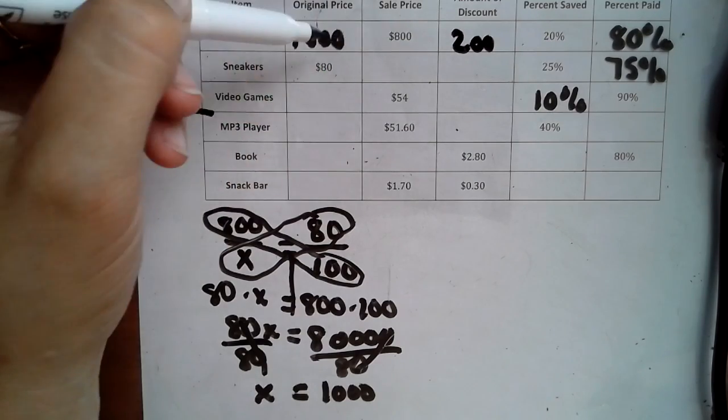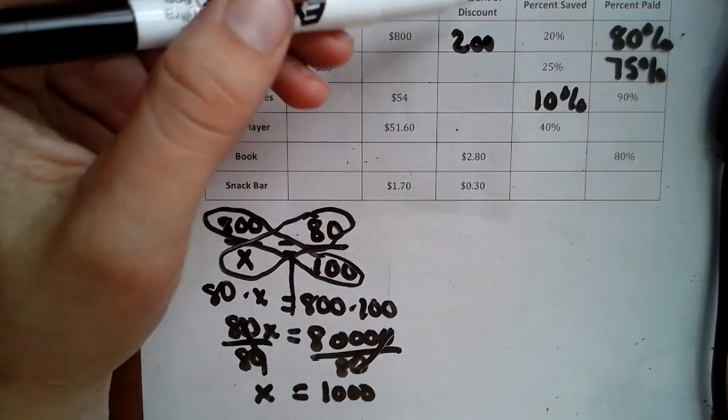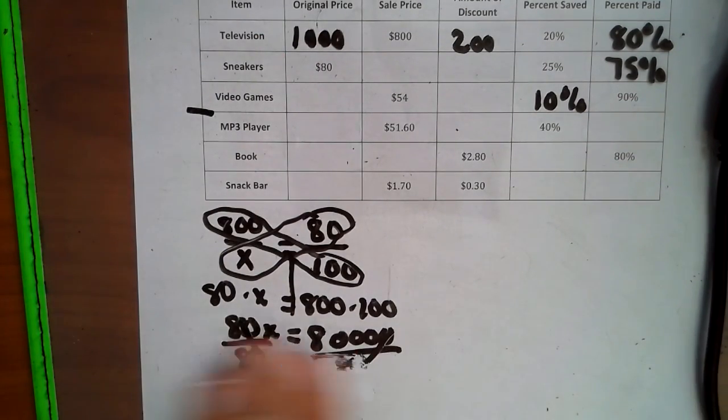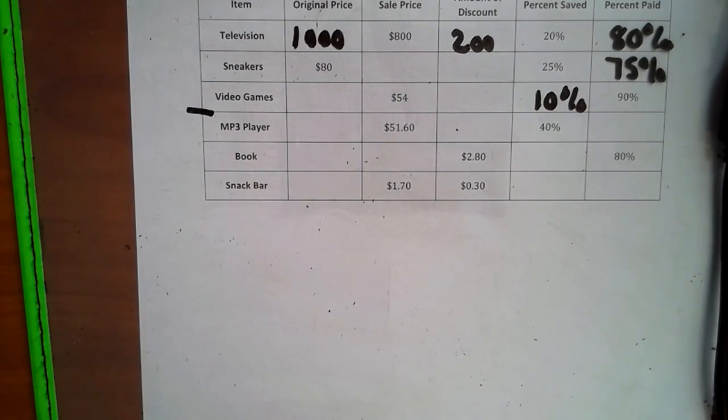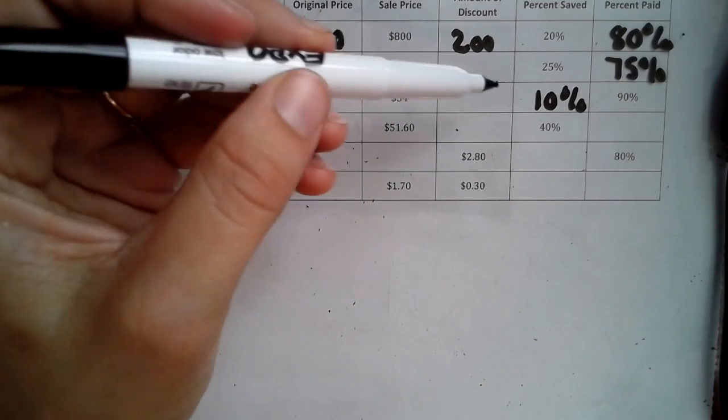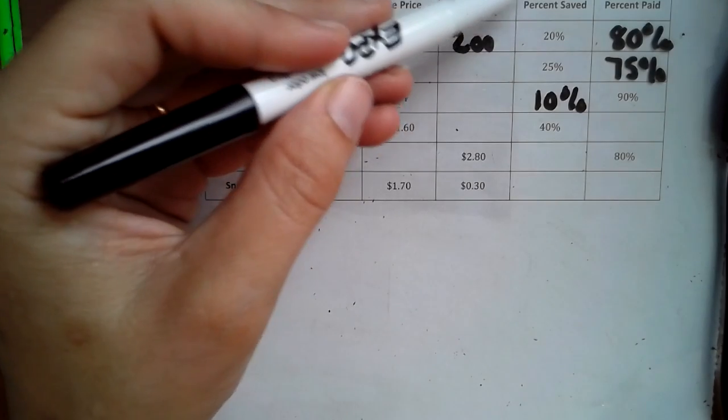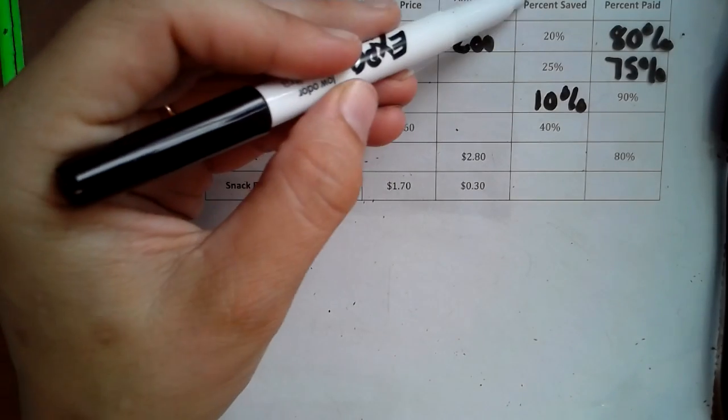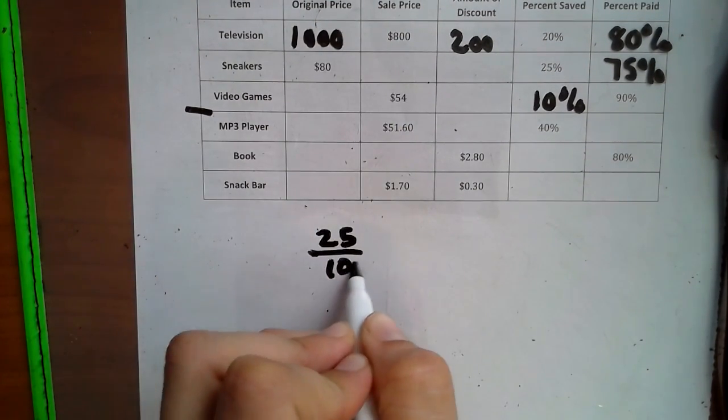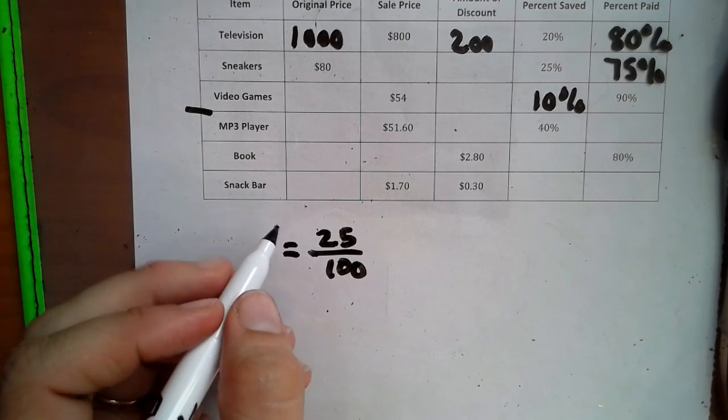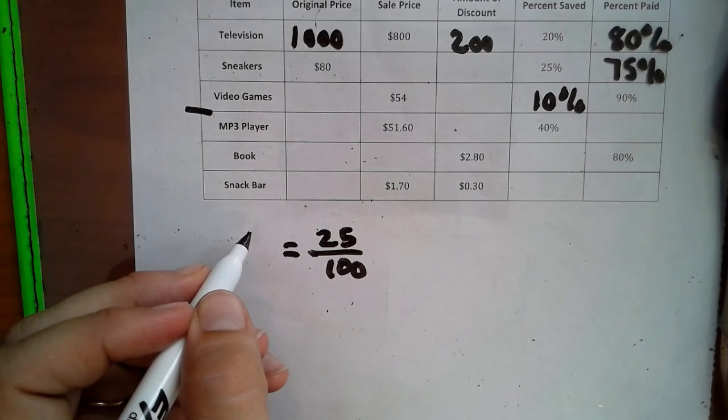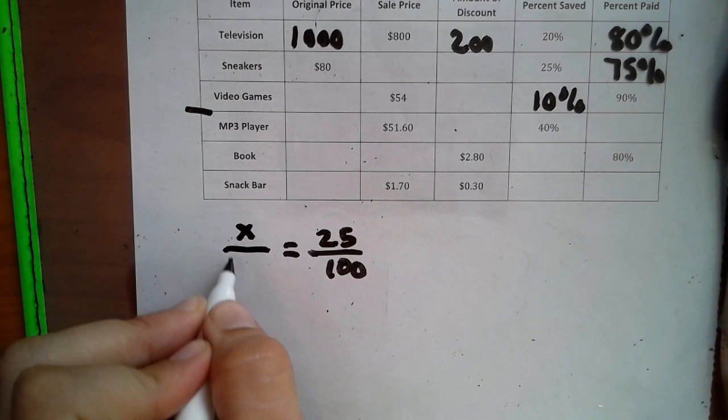We can figure that out just by sale price minus original price, the amount of discount was $200, and that's 20% of the money. So that's one problem. Now going into our next problem for the sneakers. It says our original price was $80. We don't know the sales price. We don't know the discount. But the percentage saved and the discount are the same thing. So these two things will help each other out. So we can do 25% over 100, and then we can figure out the discount. We don't have the discount, but we have the original price.